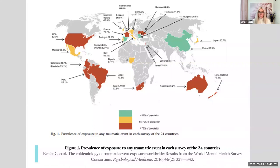Trauma is a global health epidemic. According to the World Health Organization, 70% of global people experience at least one traumatic event in their life, and almost one-third report four or more. Trauma can happen to anyone, but is more commonly experienced by those who experience oppression and marginalization.